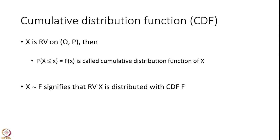With every random variable, because it is mapped from the sample space omega to a real line, there is always a quantity called the cumulative distribution function attached to it. So if X is a random variable defined on a probability space of omega and P, then the probability that X is less than or equal to small x is defined as capital F of small x, and capital F is called the cumulative distribution function or CDF of random variable X.